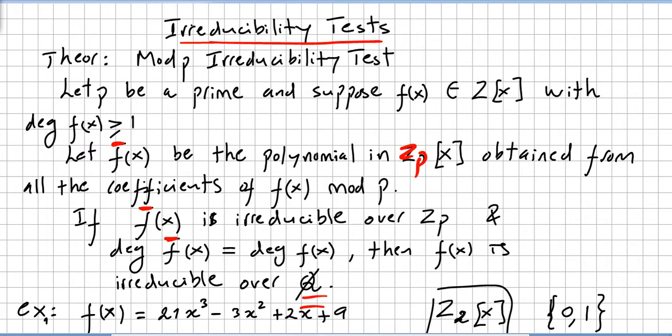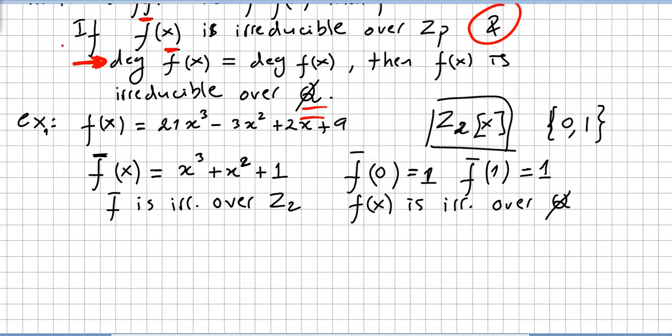The theorem says let p be a prime, and suppose f(x) is in the polynomial ring with degree of the polynomial greater than 1. And let f̄ be the polynomial in Z_p obtained from all the coefficients of f(x) modulo p. If f̄(x) is irreducible over Z_p, and I want to call your attention for this: the degree of f̄(x) equals the degree of f(x). This is very important.